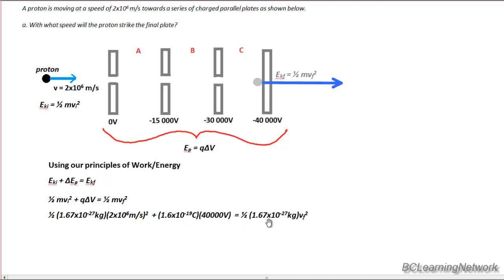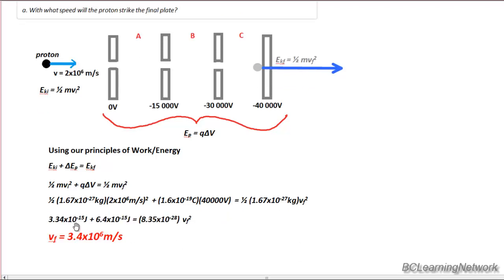And then set that equal to 1 half mv final squared, and solve for v final as follows. So we see that our final velocity when all is said and done is 3.4 times 10 to the 6 meters per second for our proton once it strikes the negative 40,000 volt plate.